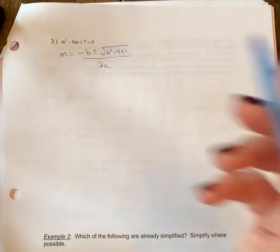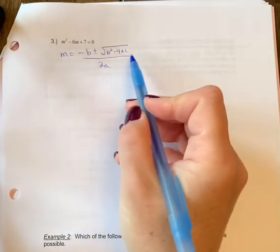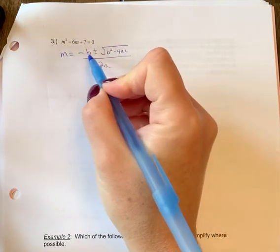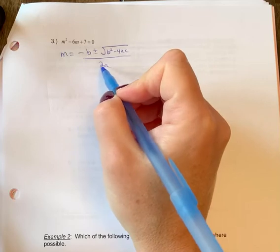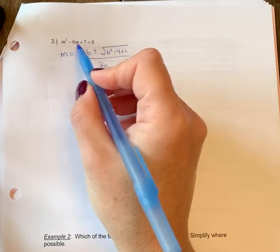All right, the third example here is I wrote out the formula. Now, normally we write x equals negative b plus or minus the square root of b squared minus 4ac over 2a. But we're not solving for x, we're solving for m.